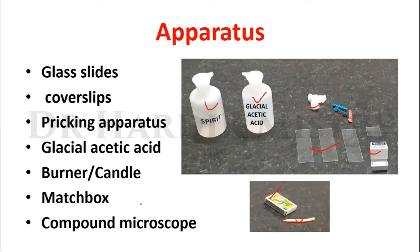The apparatus required for this practical includes glass slides, cover slips, pricking apparatus — which includes cotton, lancet and spirit — glacial acetic acid, a burner or candle (here we are going to use a candle), matchbox, and a compound microscope. These are all the instruments required for the practical of hemin crystal.